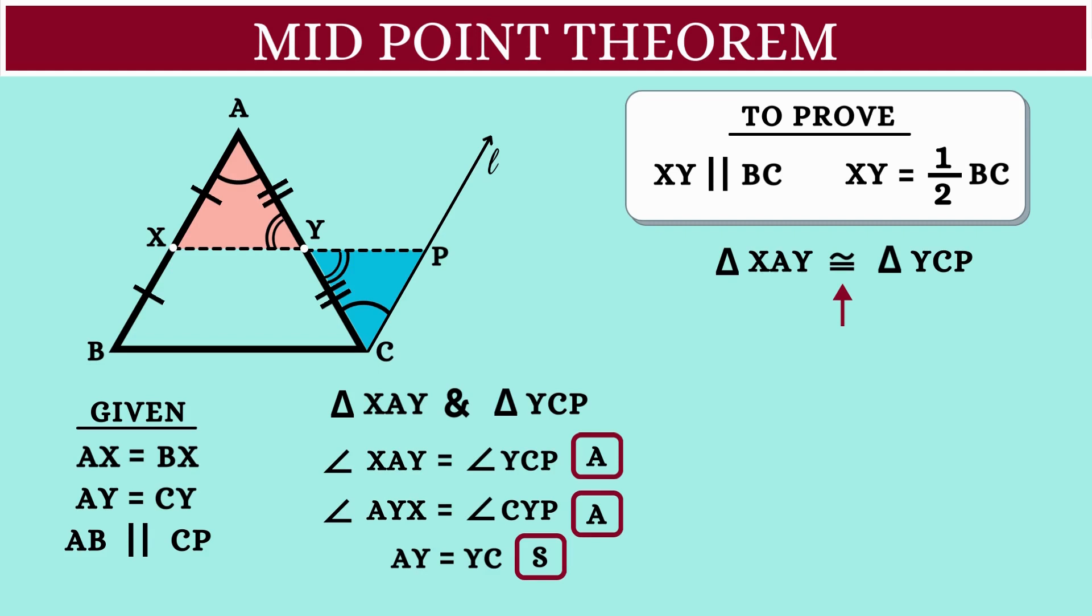That means side AX will be equal to side CP, and this will be equal to side BX as well.